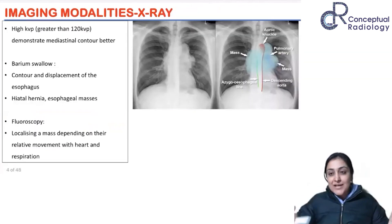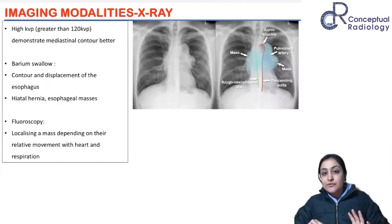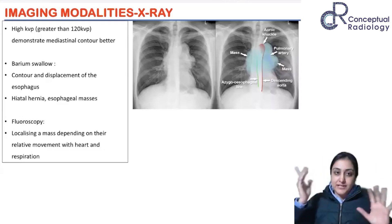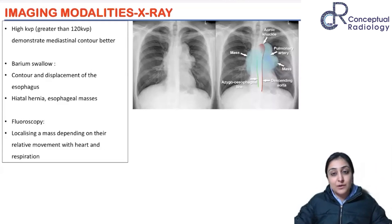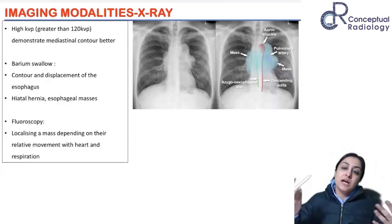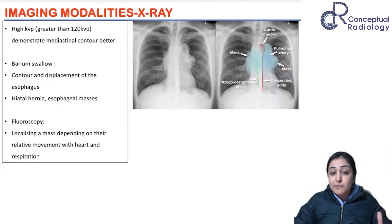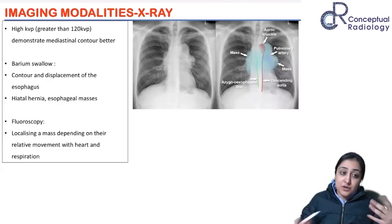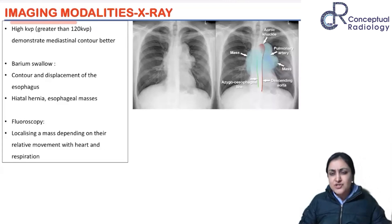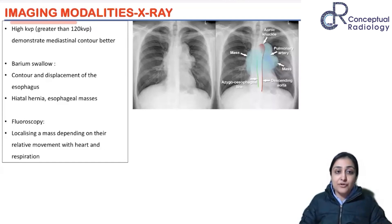Regarding imaging modalities, the X-ray is always the first investigation for a mediastinal mass — just like bone tumors, it always starts with an X-ray. Technically, a higher kVp is preferred as it gives a better idea of displacement of different structures. A barium swallow is useful if suspecting an esophageal lesion or to assess esophageal displacement by a mediastinal mass. Fluoroscopy can help localize the lesion based on movement of the heart and diaphragm.